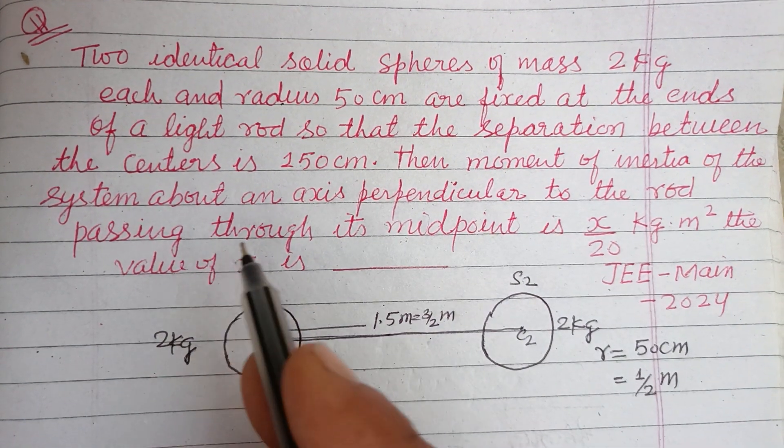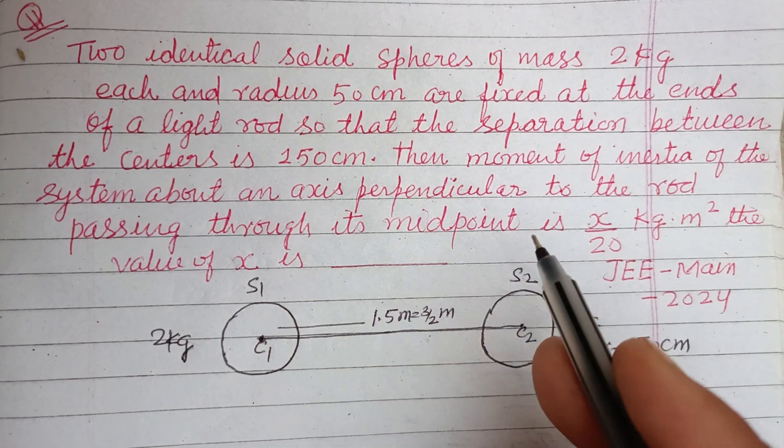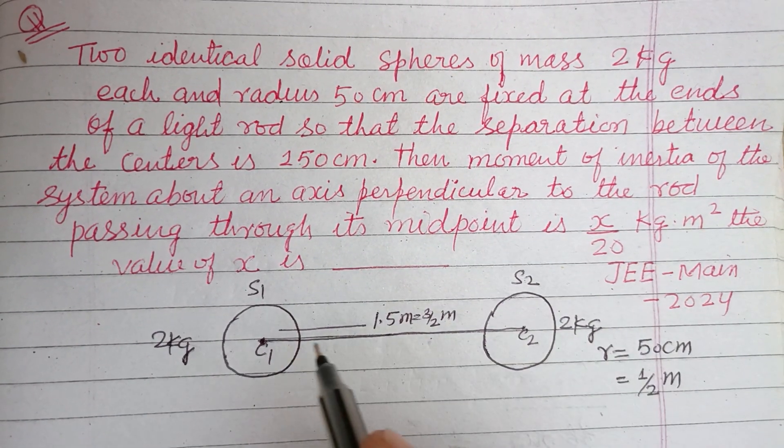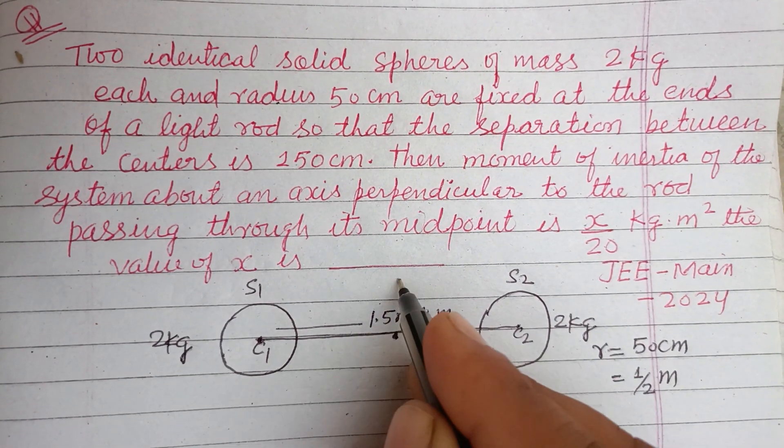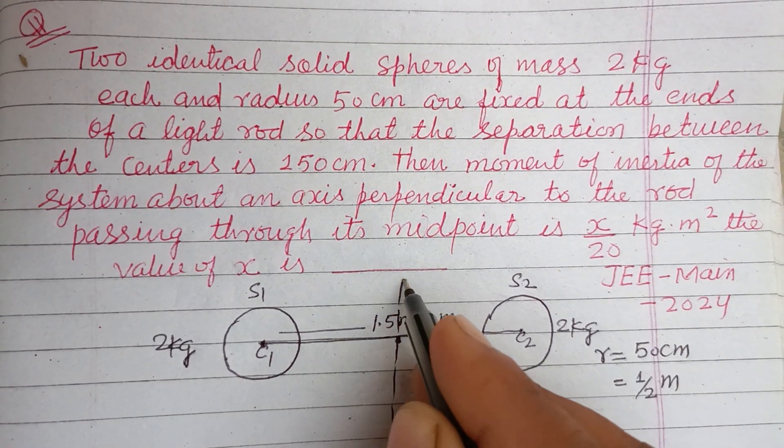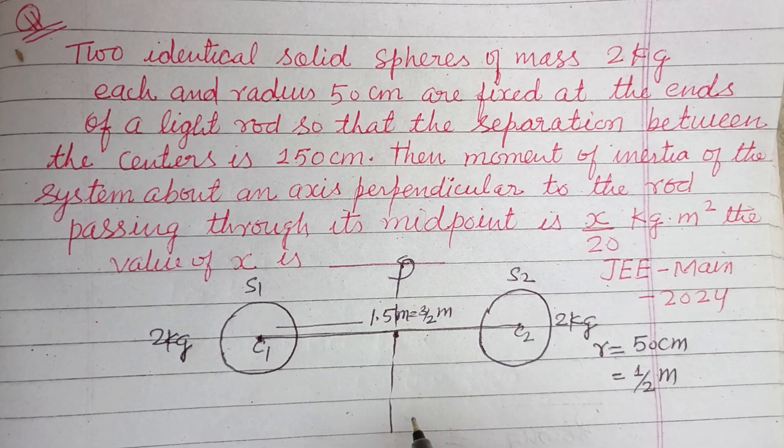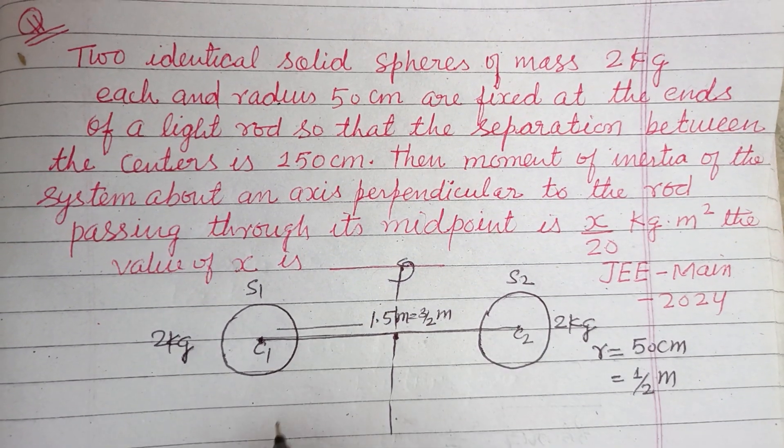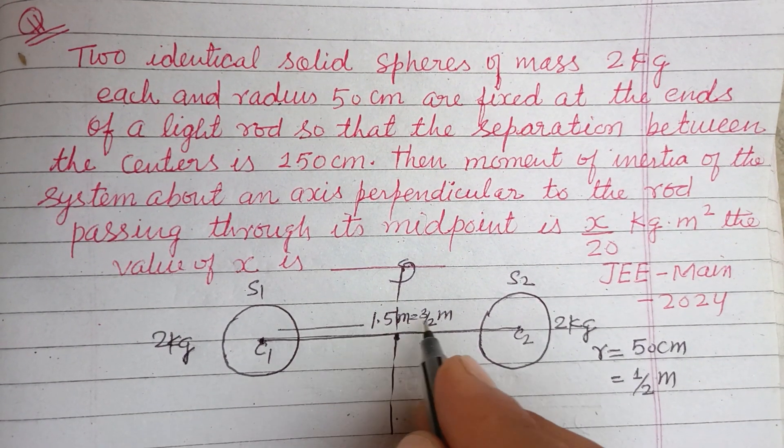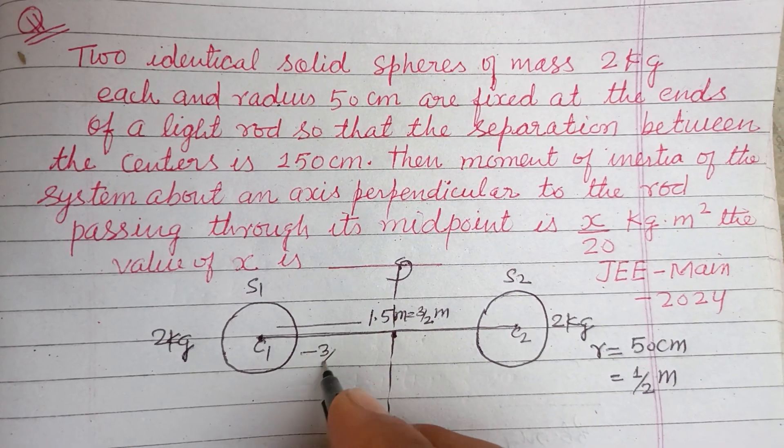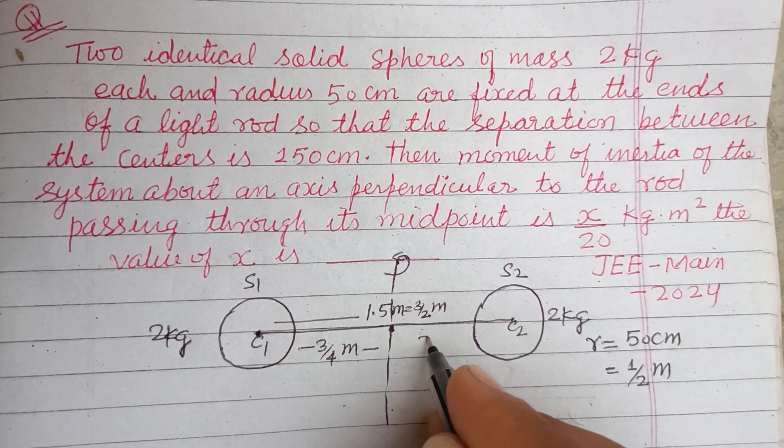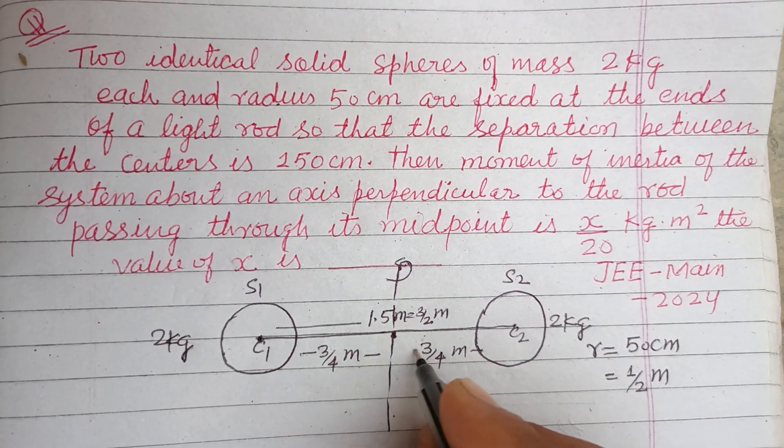Moment of inertia of the system about an axis perpendicular to the rod and passing through its midpoint - so its midpoint is here. This is the axis about which we want to find out the moment of inertia. So this is 3/2, so this is 3/4 meter, this is 3/4 meter.